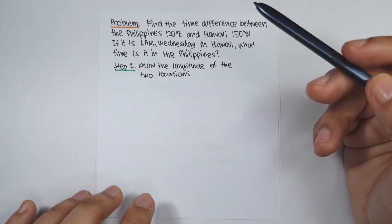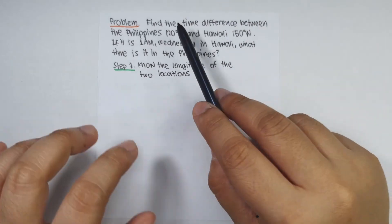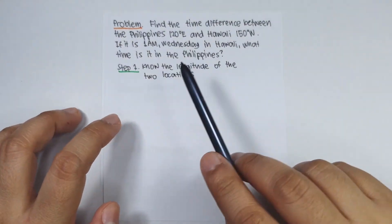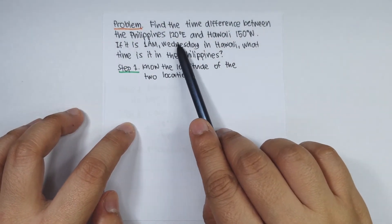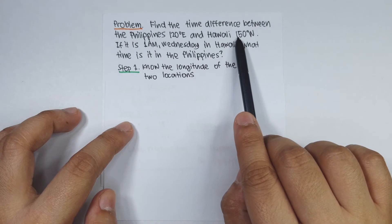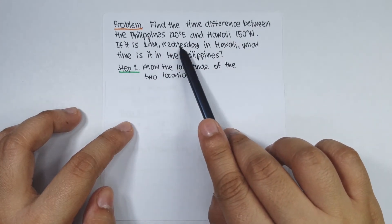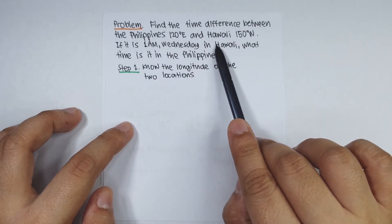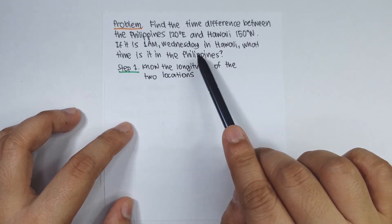Now let's solve our last problem. Find the time difference between the Philippines at 120 degrees east and Hawaii at 150 degrees west. If it is 1 a.m. Wednesday in Hawaii, what time is it in the Philippines?